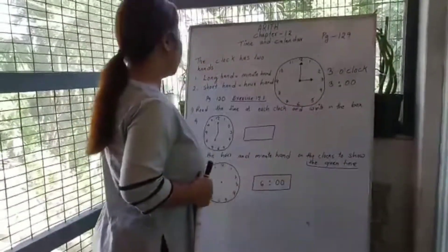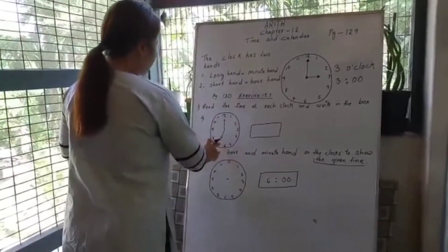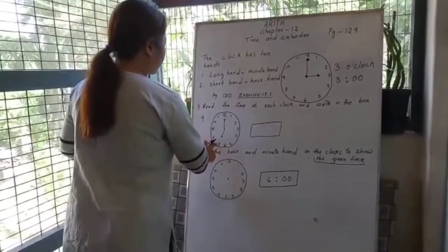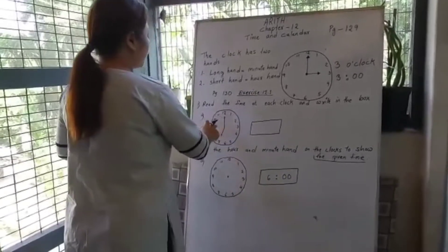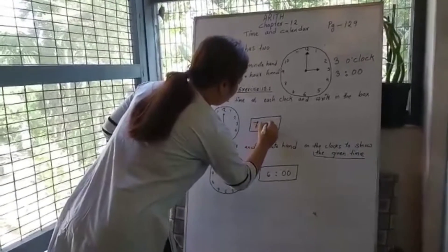Number 1: here we can see the short hand is at 7 and the long hand is at 12, so the time is 7 o'clock.